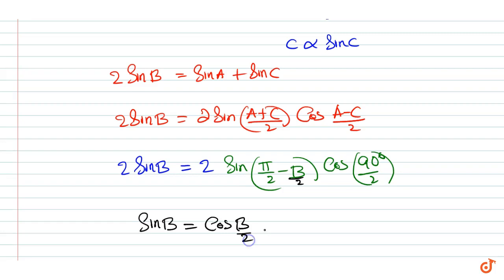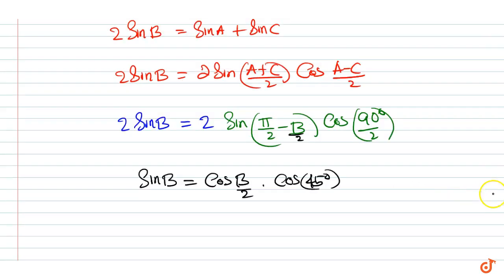Cos b by 2 into cos 45 degrees gives 2 sine b by 2 cos b by 2 into 1 by root 2.